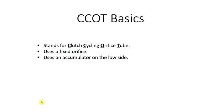Why don't we start with the CCOT basics? First off, what does it stand for? It's an acronym for a clutch cycling orifice tube system. What does that mean, or what is unique about it? What's unique is that the system uses a fixed orifice, whereas we'll show you later in the video, the TXV system uses a variable orifice. And as well with the CCOT, it uses an accumulator mounted on the low side versus the TXV system, which will use a receiver dryer that's mounted on the high side.